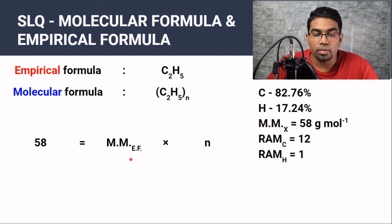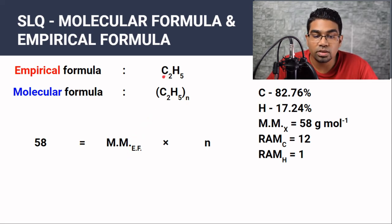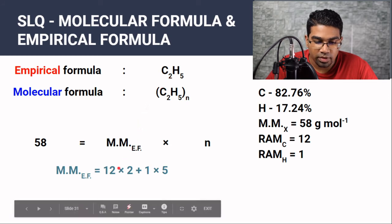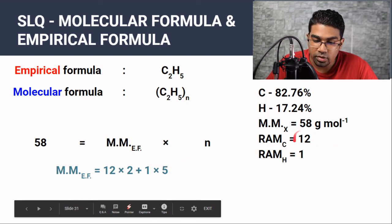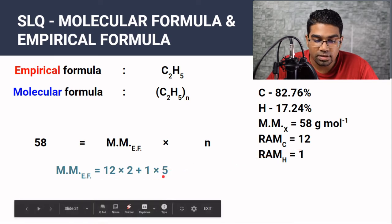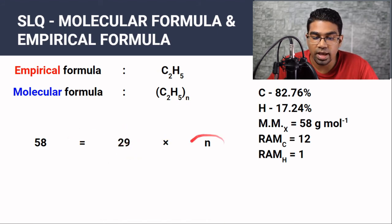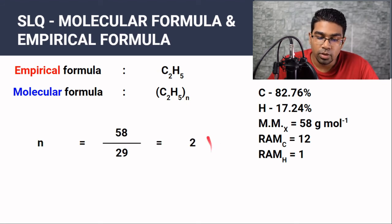To find the molar mass of the empirical formula C2H5, we add the relative atomic masses: (12 × 2) + (1 × 5) = 24 + 5 = 29 grams per mole. So 58 = 29 × N, which gives N = 58 ÷ 29 = 2.